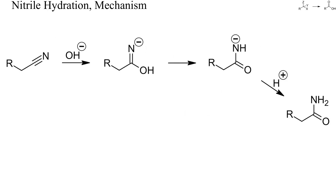Nitriles are easy to prepare by amoxidation or alkylation of cyanide. Because of their ready availability, the hydration and hydrolysis of nitriles is an important transformation. Most nitriles react with aqueous hydroxide to yield first amides. Because the alkaline hydrolysis of amides is slow, nitriles can often be hydrated in excellent yields. More vigorous conditions will, however, yield carboxylates.